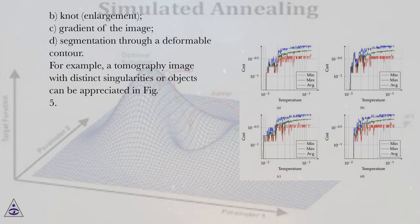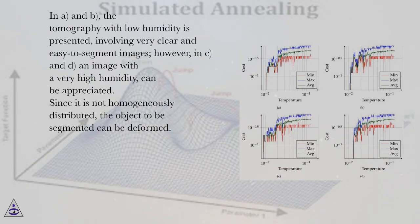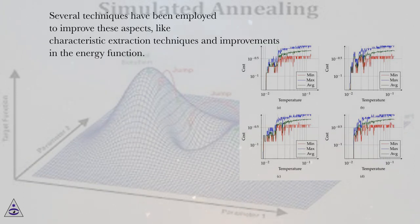A tomography image with distinct singularities or objects can be appreciated in figure 5. In figures 5a and 5b, a tomography with low humidity is presented, involving very clear and easy-to-segment images. However, in figures 5c and 5d, an image with very high humidity is shown; since the humidity is not homogeneously distributed, the object to be segmented can be deformed.